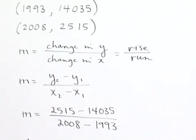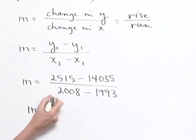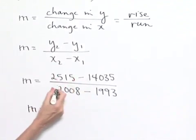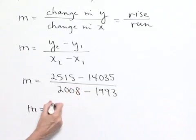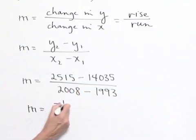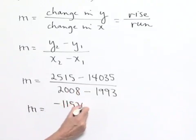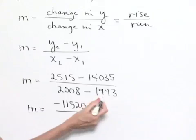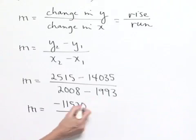We're now going to do our subtraction. M is going to equal, in our numerator, 2,515 minus 14,035 gives us a negative 11,520. In our denominator, 2,008 minus 1993 gives us a difference of 15.